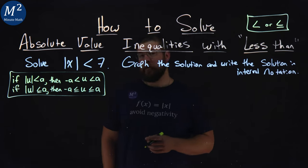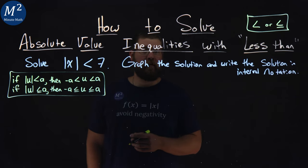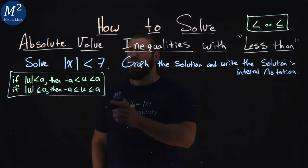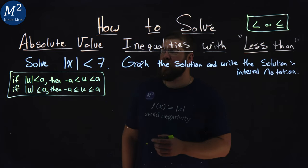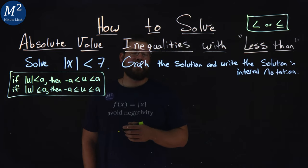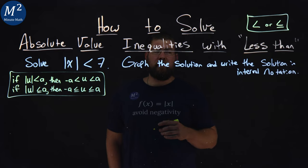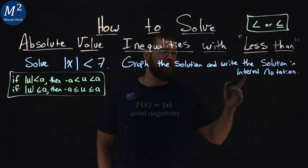So basically, we're sandwiching u with a negative and positive a. So let's look at our example here. We want to solve the absolute value of x is less than 7, and then graph the solution and write the solution in interval notation.